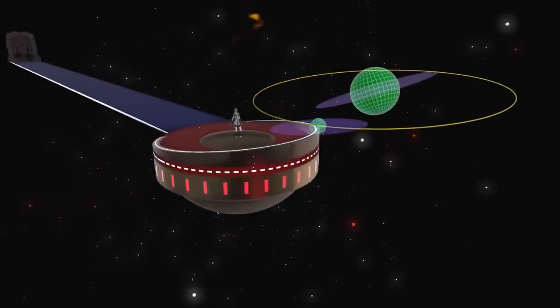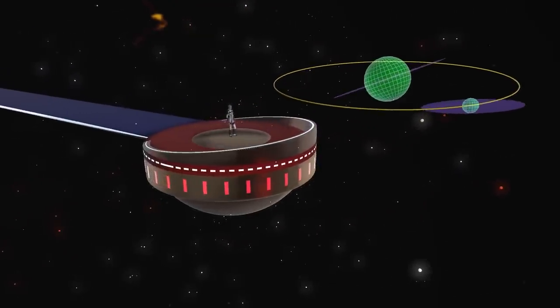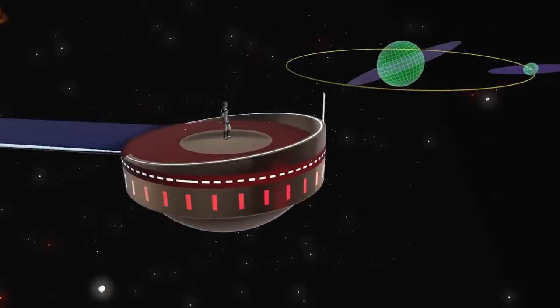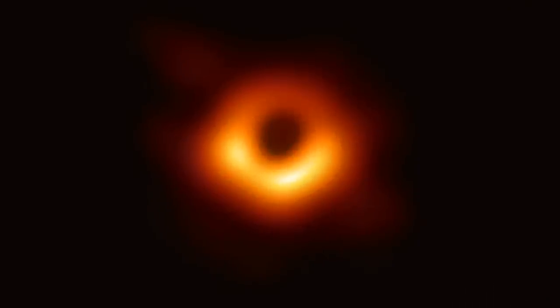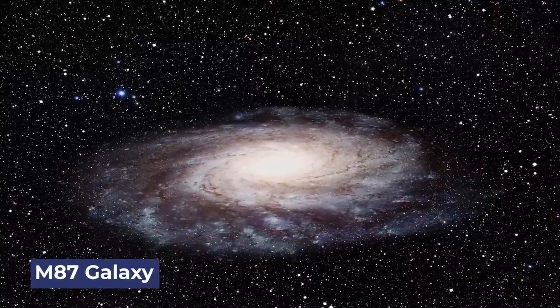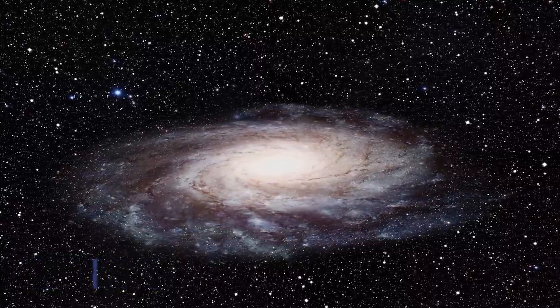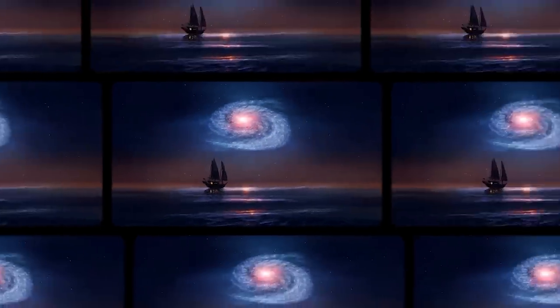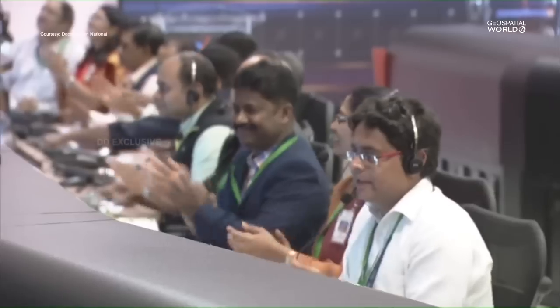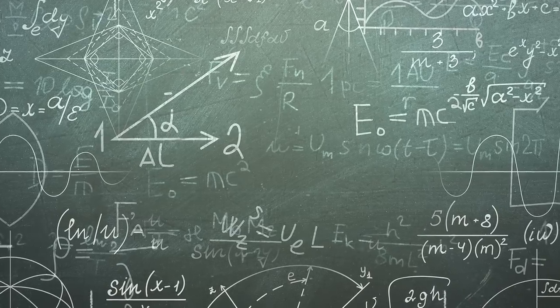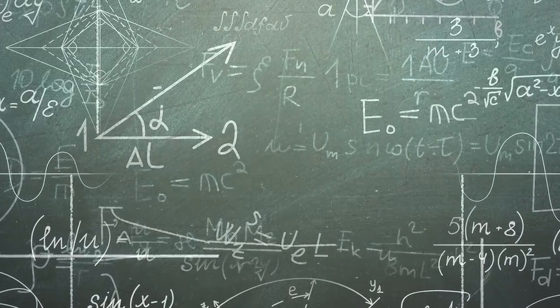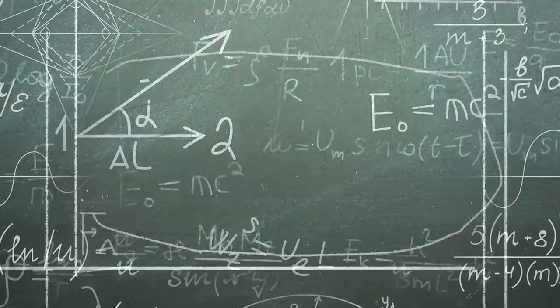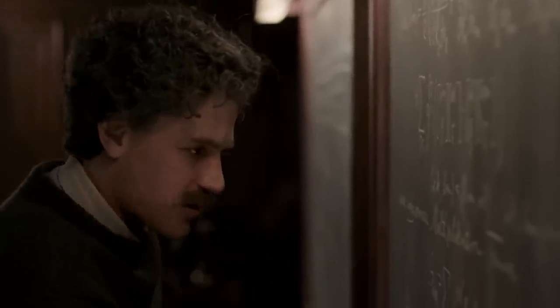In a momentous feat achieved in 2019, a team of brilliant minds from the Event Horizon Telescope Collaboration accomplished something truly groundbreaking. They managed to capture an image that had been an elusive enigma for centuries—the first-ever photograph of a black hole. This remarkable achievement unveiled a black hole nestled within the M87 galaxy, an unimaginable 55 million light-years away from our tiny blue planet. The scientific community erupted with joy at this extraordinary image, as it served as undeniable proof of Albert Einstein's visionary prediction of black holes in his revolutionary theory of relativity. This was a theory he put forth all the way back in 1916.